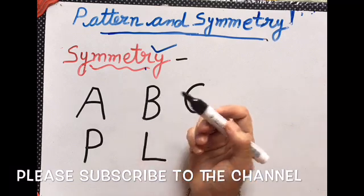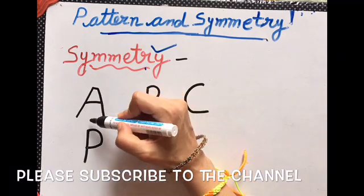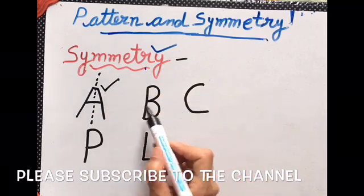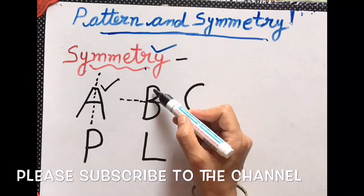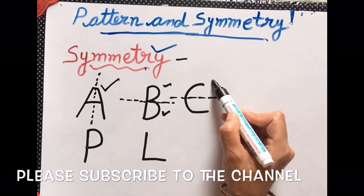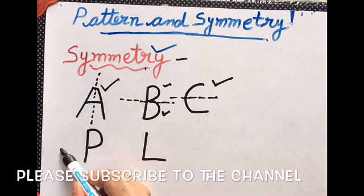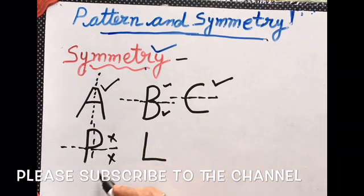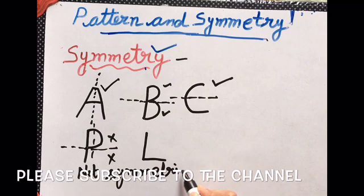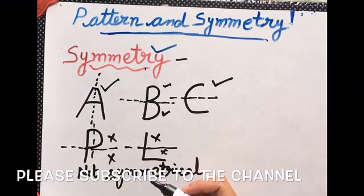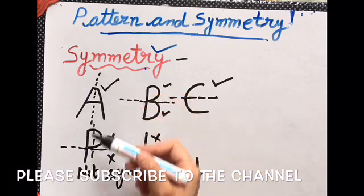Let us take few examples to check whether they are symmetrical or not. In case of A, if I draw a line here, you can see both parts are equal. So it is symmetrical. In the same way, if I draw a line here for B, both parts are equal. So it is also in symmetry. If I draw a line here for C, these are also equal. So it is showing the symmetry. Now in case of P, if I draw a line here, both are different. And if I draw a line here also, even then both are different. So this is not symmetrical. In case of L also, this is different, this is different. So L is also not symmetrical.